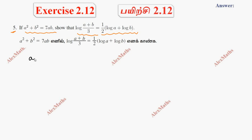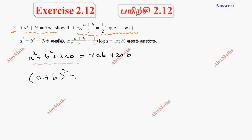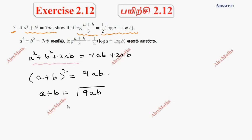We are given a squared plus b squared equals 7ab. We add 2ab to both sides. This uses the formula: a squared plus b squared plus 2ab equals (a plus b) whole squared. So (a plus b) whole squared equals 9ab, which gives us (a plus b) by 3 equal to the square root of ab.